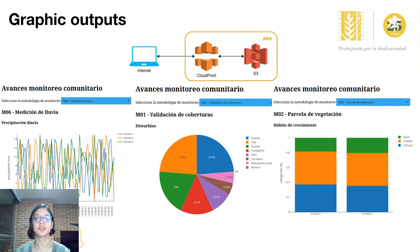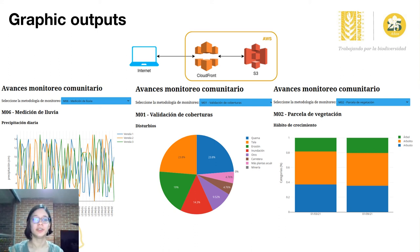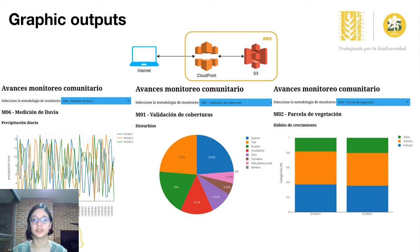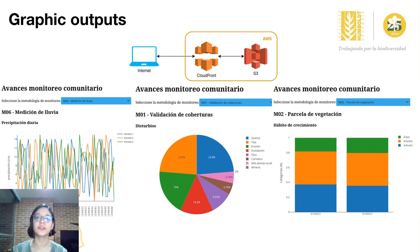The web page will have charts for the associated indicators and other statistics by methodology. Once a methodology is selected, the analyzed data can be filtered by the peasant association leading the monitoring process. This filter will display an indicator of the fulfillment of the monitoring based on the expected frequency of data capture. For each project, we will teach the communities how to read and interpret the different charts. These tools will provide simple and useful information to peasant associations on the changes and trends that biodiversity is experiencing, and to identify whether conservation and sustainable production objectives are being met, or to evaluate the monitoring process in general. This will empower them in the process of generating information about biodiversity that can contribute to decisions taken in their territory.